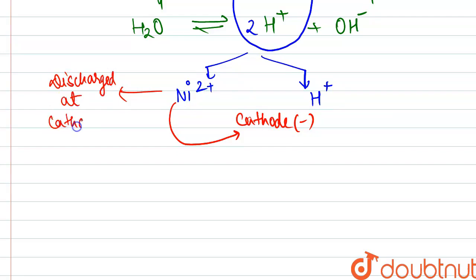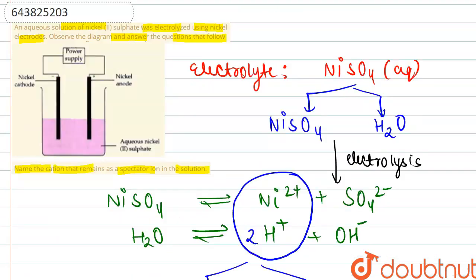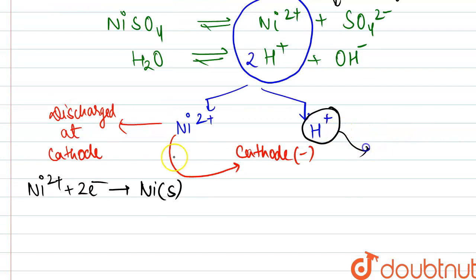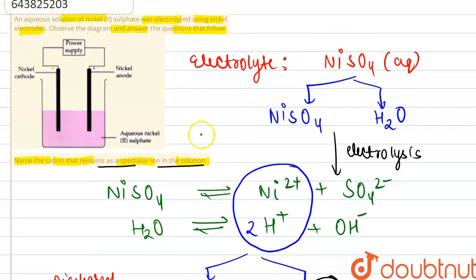How does this discharge happen? Ni²⁺ gains two electrons and gets deposited as nickel solid. However, H⁺ ion is left behind in the solution. So the cation that remains as a spectator ion in the solution is the H⁺ ion. The answer to this question is H⁺ ions. Thank you.